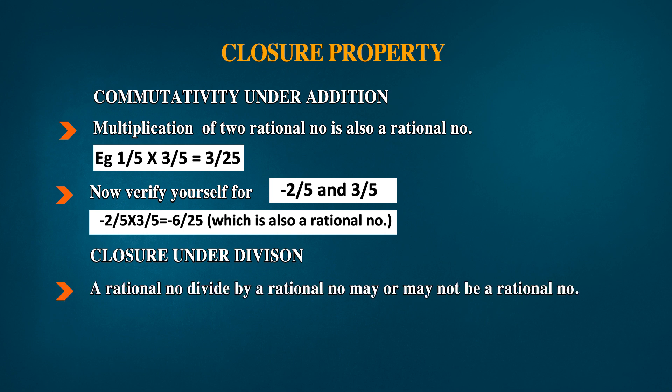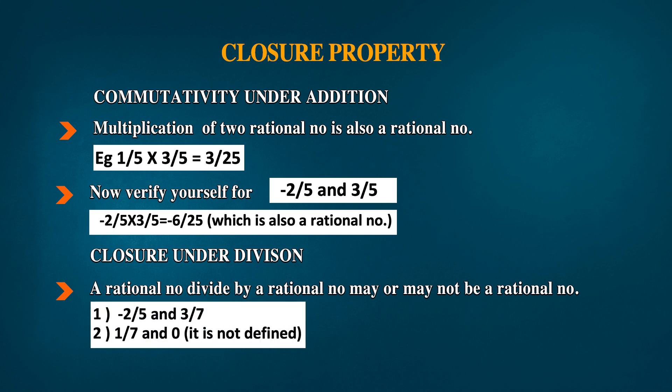Closure under division: a rational number divided by a rational number may or may not be a rational number. For example, -2/5 ÷ 3/7 gives a rational number. But when we divide 1/7 by 0, we get 'not defined.' So rational numbers are not closed under division.